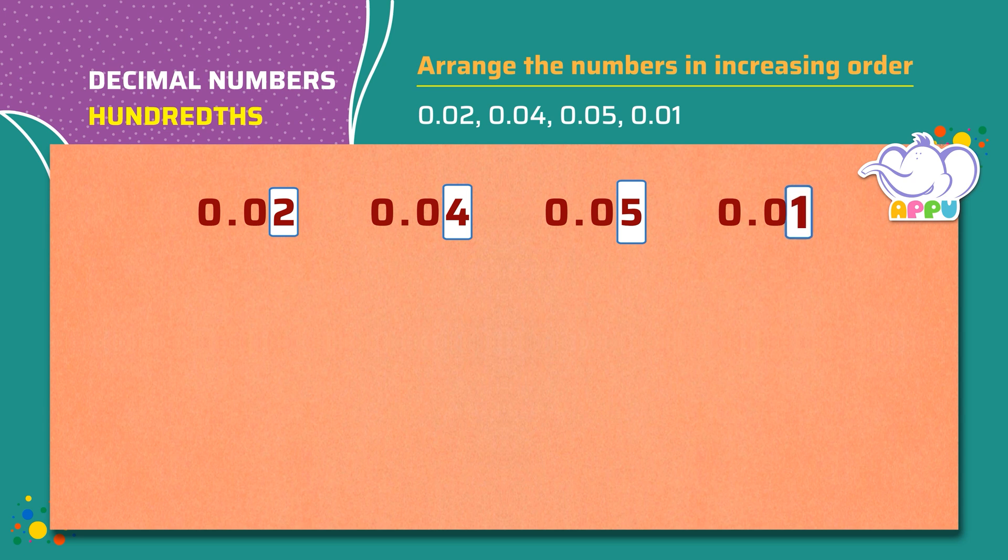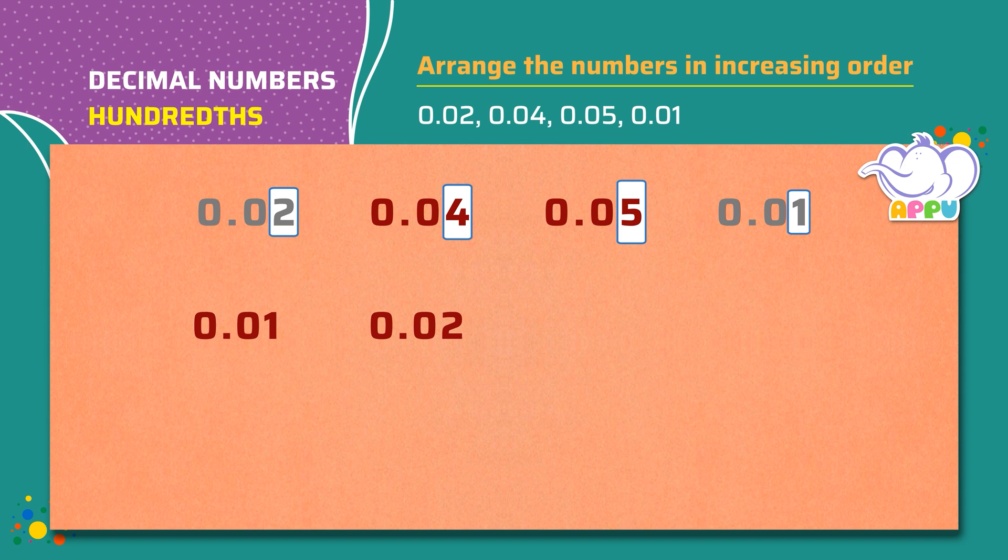Here 1 is the smallest. So we write 0.01. Next smallest number is 2. So we write 0.02. Next smallest number is 4. So we write 0.04. And 0.05 is the last number.